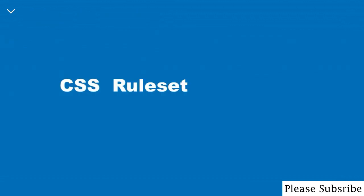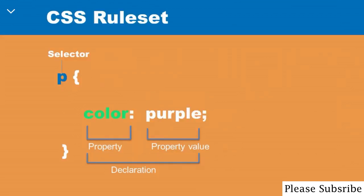Let's take a look at a typical CSS rule set. The whole structure you can see on the screen is referred to as a rule set, but often called rule for short. When you want to apply CSS to an HTML element, the very first thing you do is specify the element — that is referred to as a selector. In this case, the P here is the selector, which is the HTML element I want to apply styling to. Next, you need to put in an opening curly brace and a closing curly brace — very important. Inside the curly braces is where you actually write the CSS.